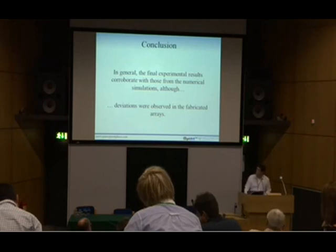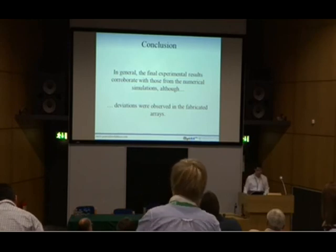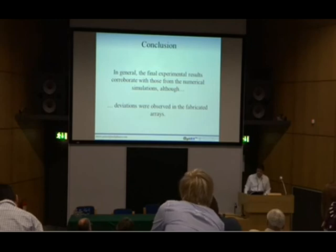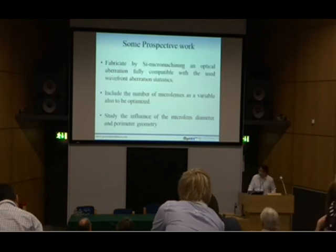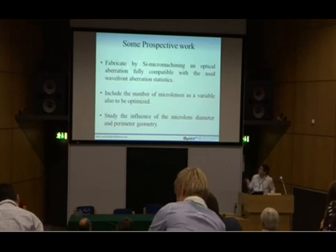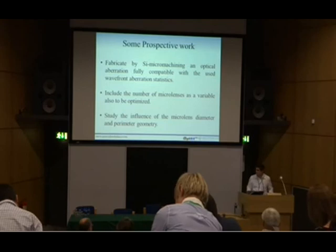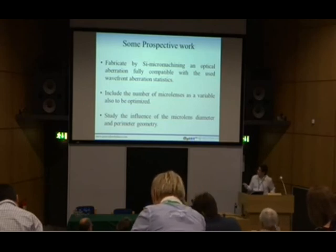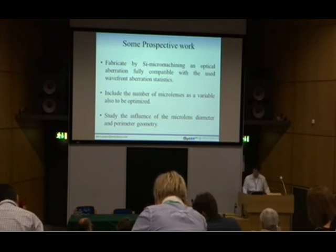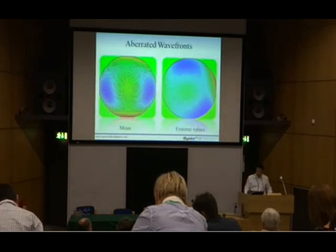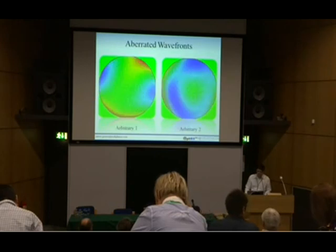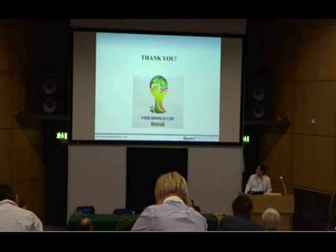In general, what we conclude is that the experimental results collaborate with those we obtained from simulation, although some variations were observed, which means we still have some work to do to refine these results. What we propose next: we still need to fabricate an aberration using silicon micromachining that is fully compatible with the statistics used. We also plan to include the number of microlenses as a variable in the optimization process, and study the influence of microlens diameter and the geometry parameters of each microlens. We are already fabricating, and these pictures illustrate the operations we are working on now. Thank you.